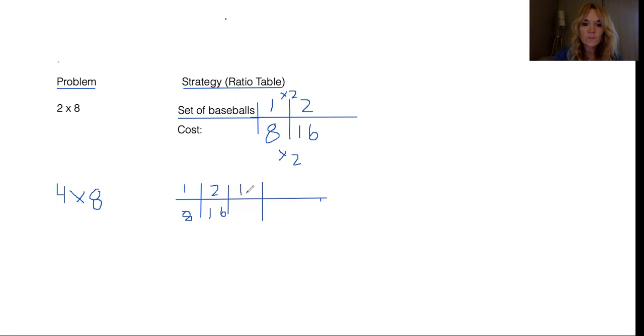What's going to happen with four baseballs? Again, if I'm doubling each one times two, what's the relationship here? It would be 32. 16 times 2 is 32. 2 times 2 is 4. 1 times 2 is 2.